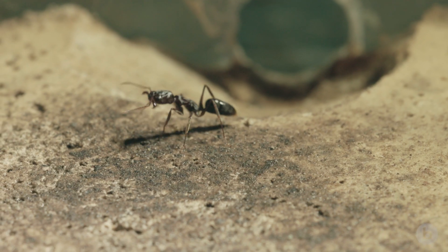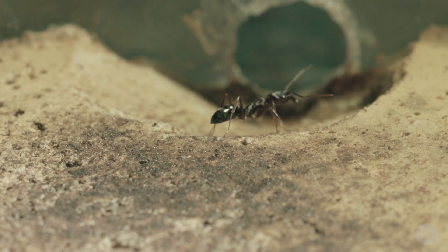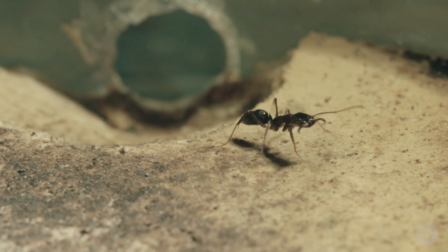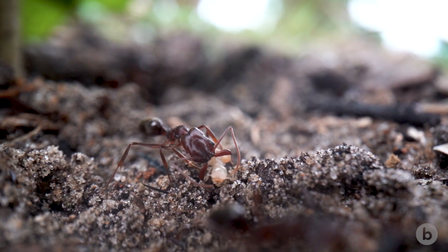There are things that we cannot do with real animals. We cannot actually cut the mandibles of the trap jaw and so that they have shorter mandibles and see what happens. But we can do this with our robots.